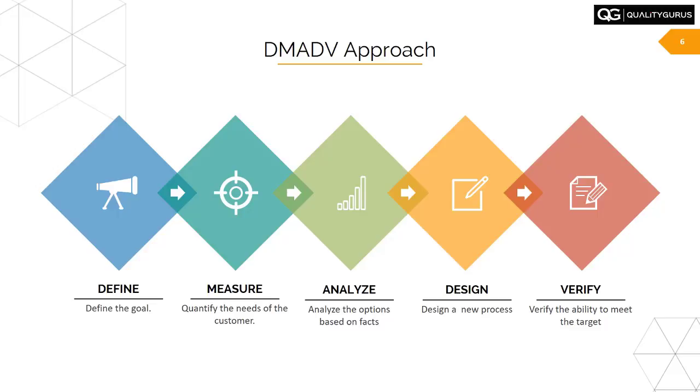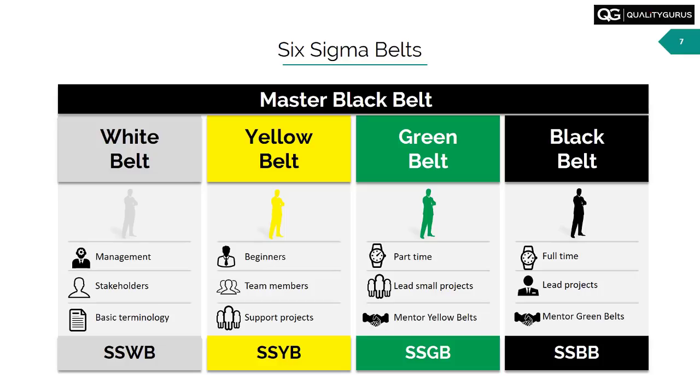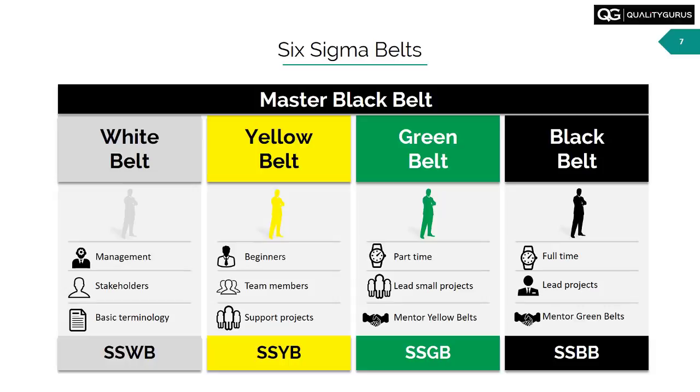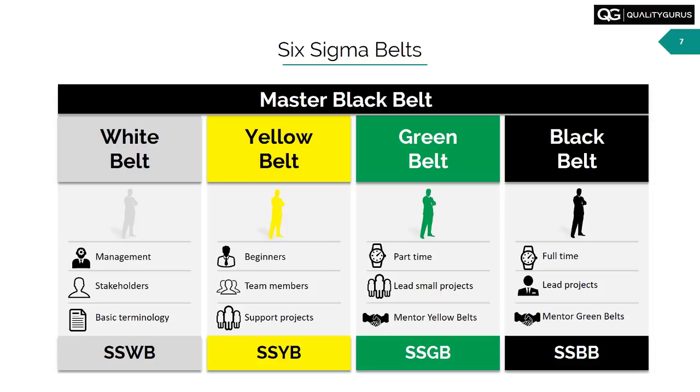After that, we'll look at the belt system in Six Sigma. This course is the White Belt. Once you complete it, you can move to the Yellow Belt, then the Green Belt, then the Black Belt — all four courses are available on Udemy. In industry, you'll also encounter the Master Black Belt, who is the person responsible for training Black Belts.